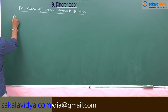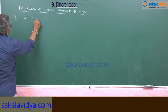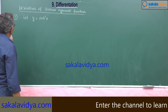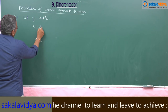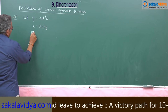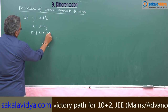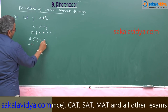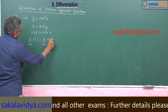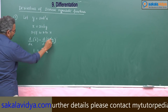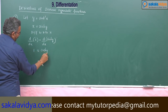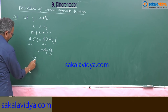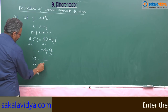First one: let y is equal to sinh⁻¹(x). So this we can write as x is equal to sinh(y). Differentiating with respect to x, d/dx of x is equal to d/dx of sinh(y). Derivative of x is 1, and this is cosh(y) into dy/dx. So dy/dx is equal to 1 by cosh(y).